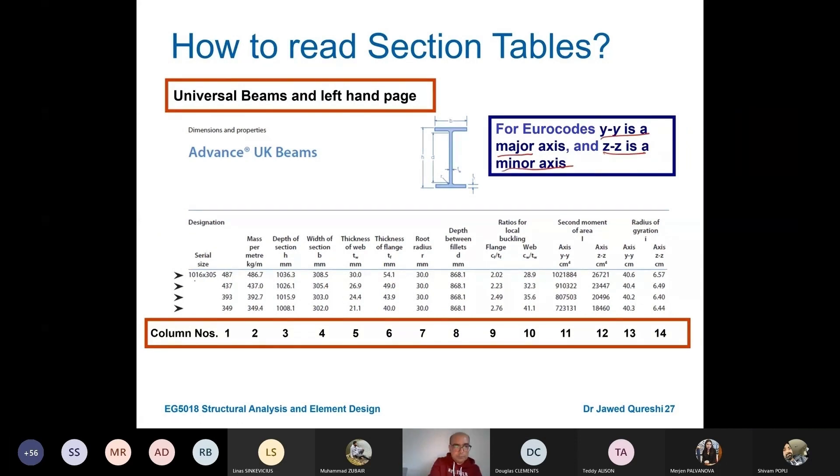The notation over here, 1016x305x487. The first dimension is always the overall depth of the section, H. And second dimension is the breadth of the section. The section itself is 1016x305, and then its mass is given as well.